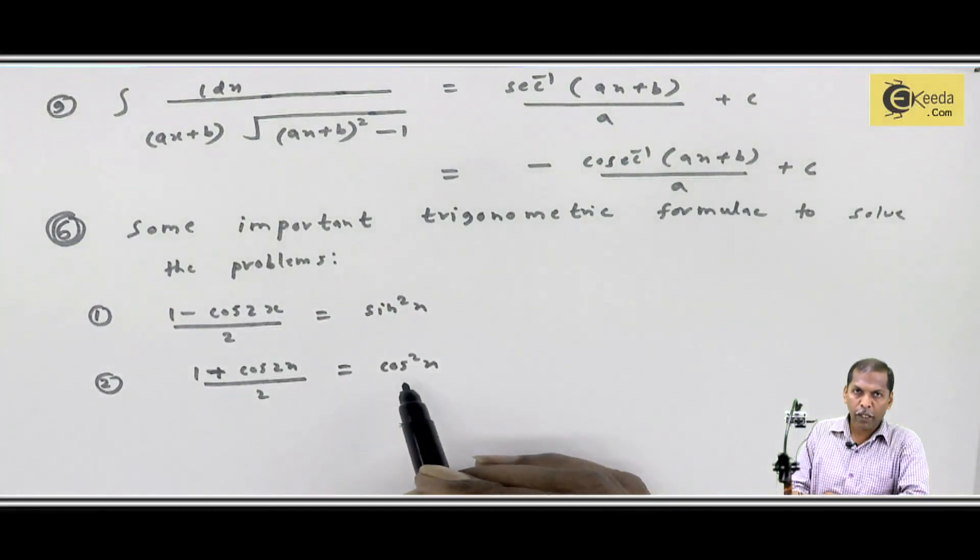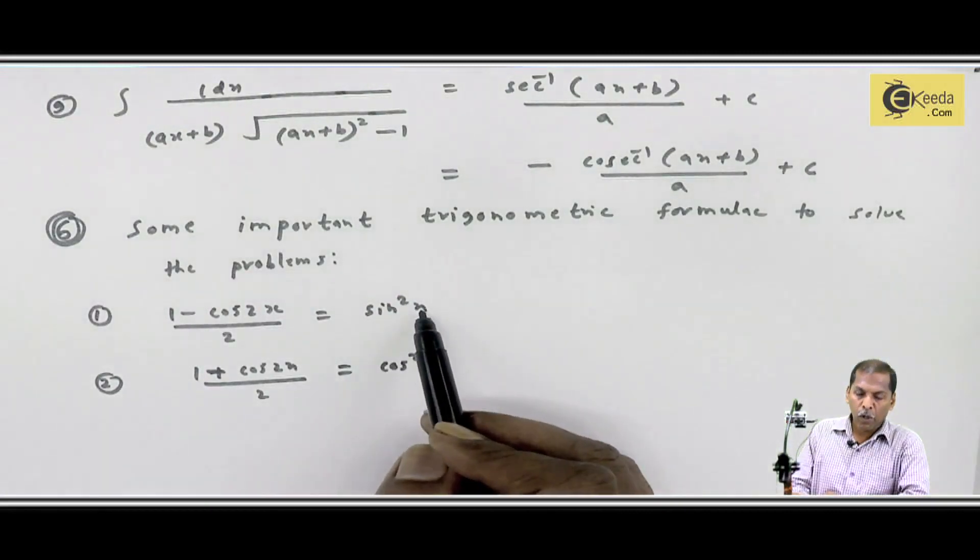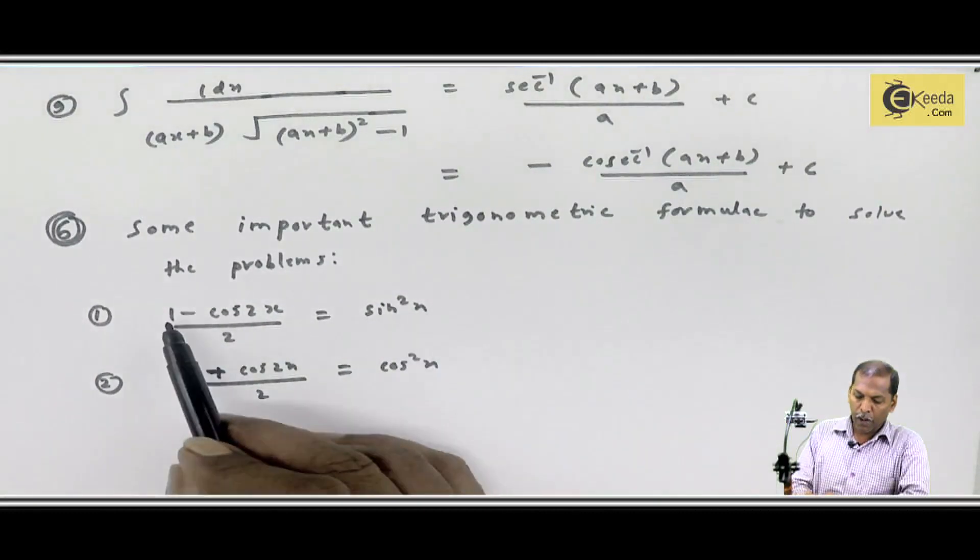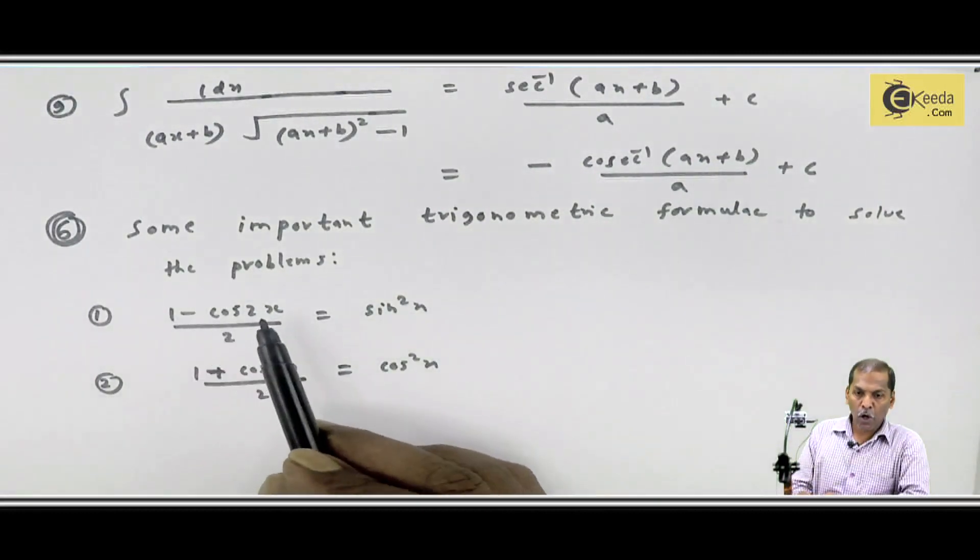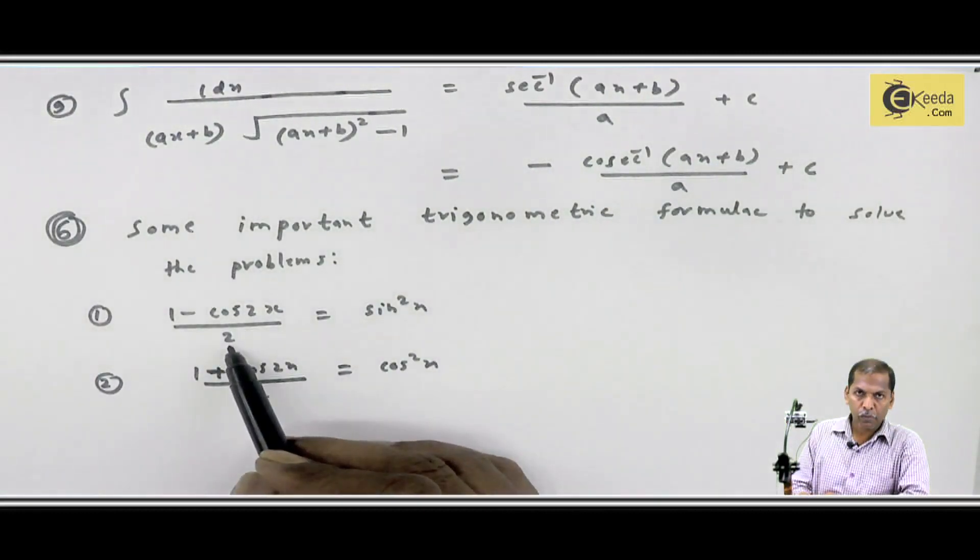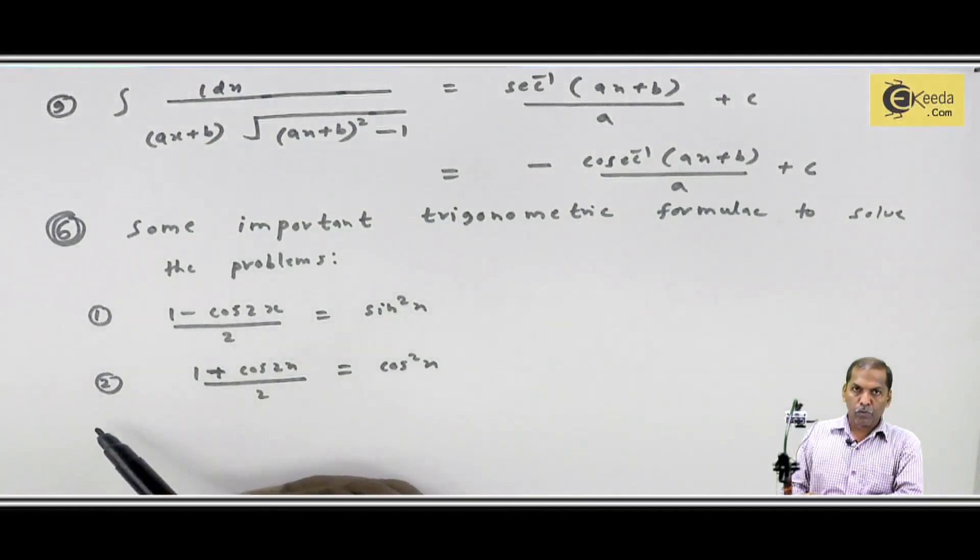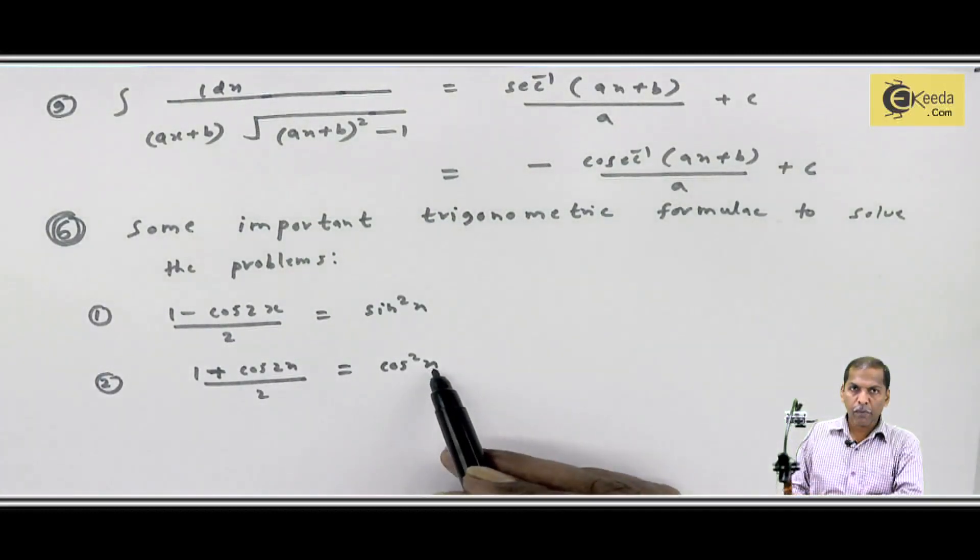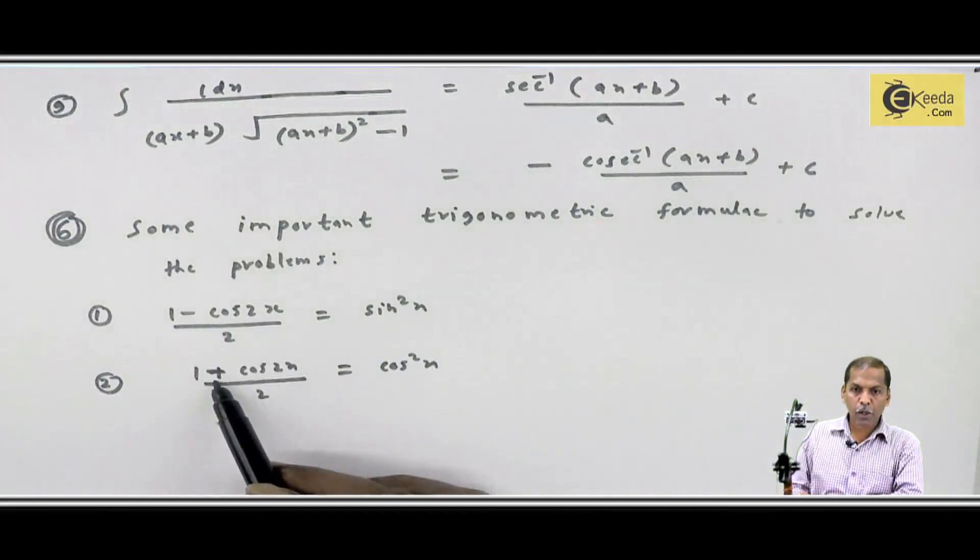So when we find sin²x, we can replace it with 1 minus cos2x upon 2. And if we find cos²x, then replace with 1 plus cos2x upon 2.